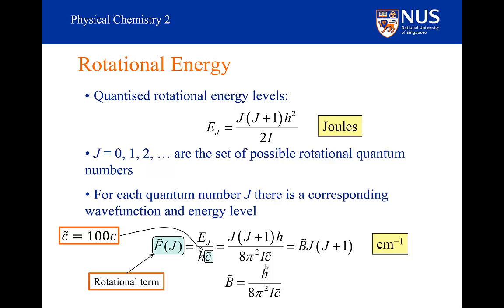I can group the constants together into a constant that is specific for that molecule because it is dependent on the moment of inertia I. Please note that I is calculated using SI units. For the diatomic, the reduced mass is in kilograms and the bond length is in meters. We call that constant the rotational constant and we give it the letter B. We use B tilde because it is in units of wave numbers, centimeters to the minus one.